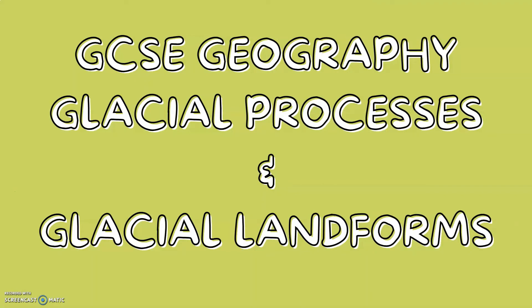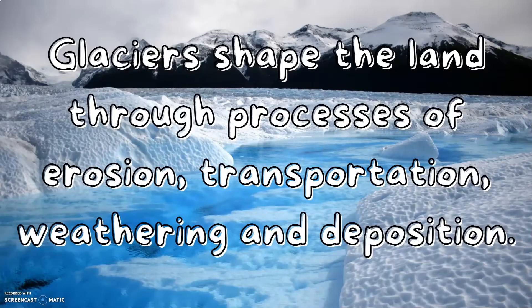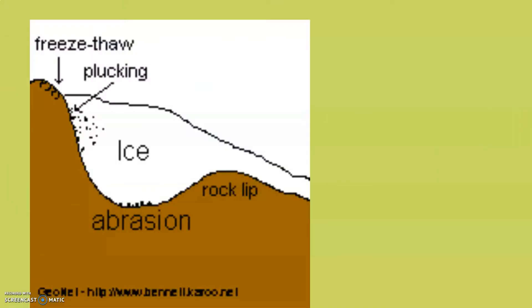GCSE geography: glacial processes and glacial landforms. Glaciers shape the land through processes of erosion, transportation, weathering and deposition, and a couple of them can be seen in this initial diagram.